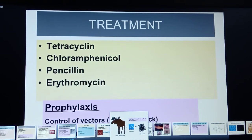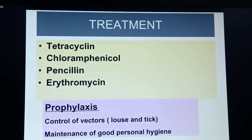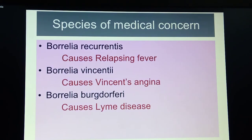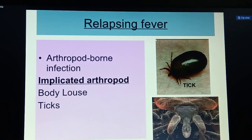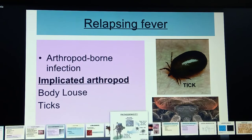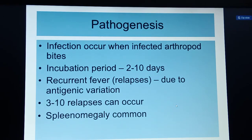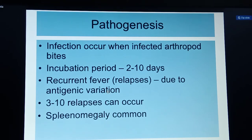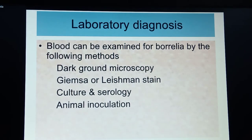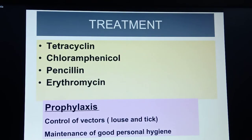To revise: Borrelia recurrentis is relapsing fever caused by arthropod-borne infection via insects or body lice. Pathogenesis involves a 2 to 10 day incubation period, relapses for 3 to 10 days, and splenomegaly. Treatment is tetracycline, chloramphenicol, penicillin, and erythromycin. Prophylaxis involves vector control and good personal hygiene.